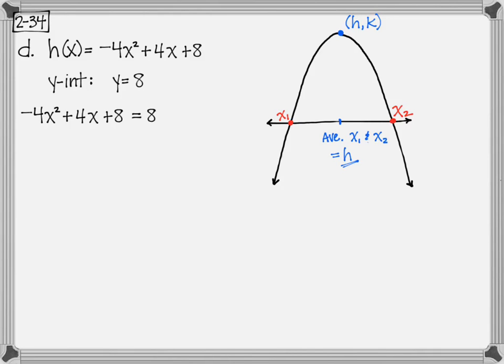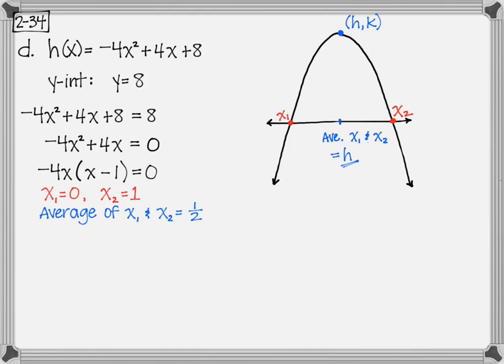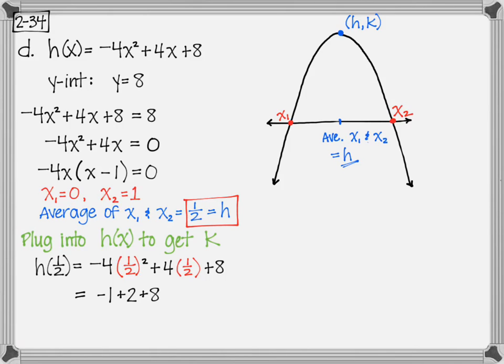So we set the two equations equal to each other, subtract 8 from both sides to make it equal 0, factor, and then we can find our x sub 1 and x sub 2. Now, the average of 0 and 1 is 1 half, so our h is 1 half. We're going to plug in 1 half into our function, and that will help us to evaluate for k, which is 9.